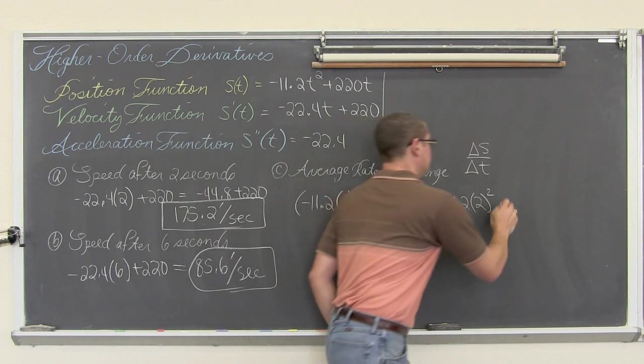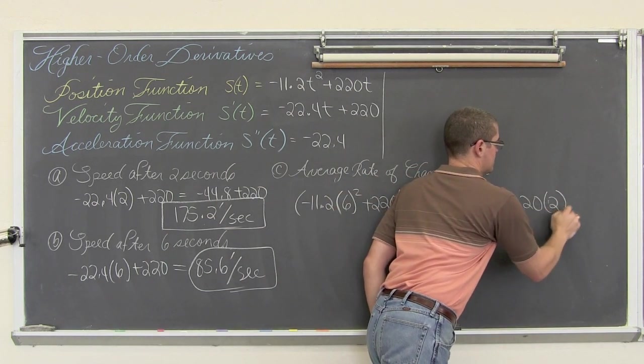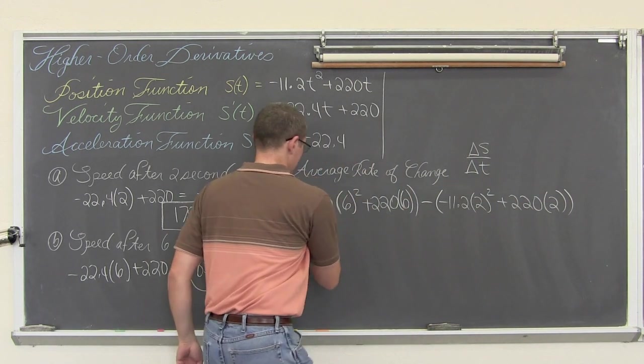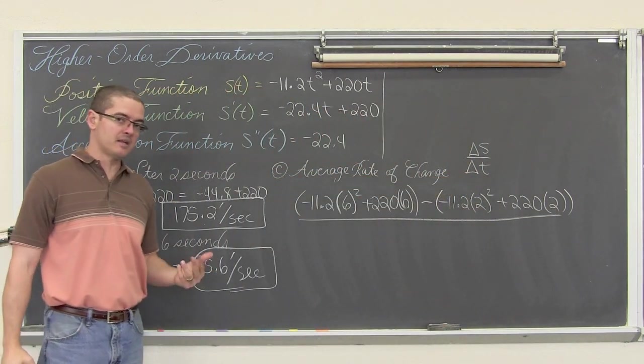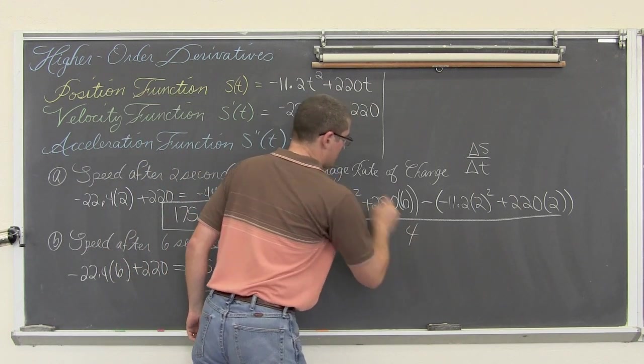Yes, plus 220 times 2, all over the change in t, the change in time which 6 minus 2 is equal to 4.